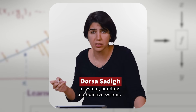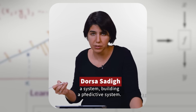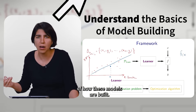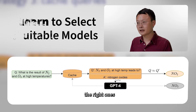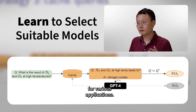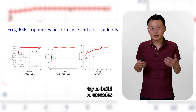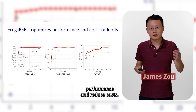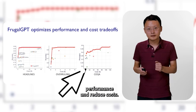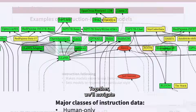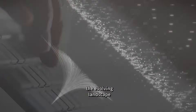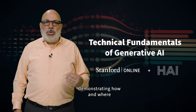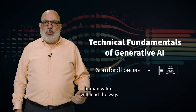We're interested in building a system, building a predictive system. They'll cover the basics of how these models are built and guide you in selecting the right ones for various applications. We can actually try to build AI cascades that can help to improve performance and reduce cost. Together we'll navigate the evolving landscape of generative AI, demonstrating how and where human values will lead the way.